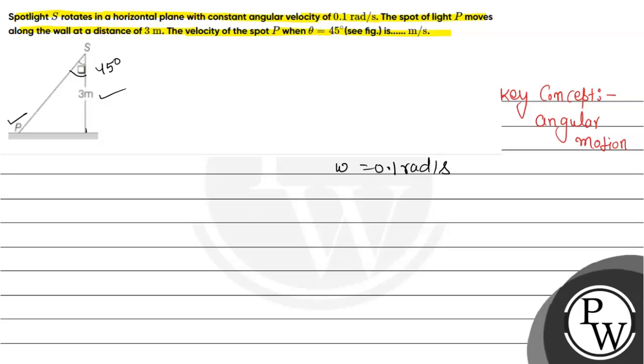In this case, we will find the velocity of spot P. First, if we talk about the triangle, we will consider triangle SPQ. In this particular triangle, if we observe, we have the value of tan theta.